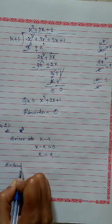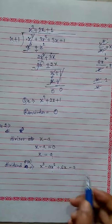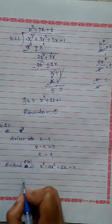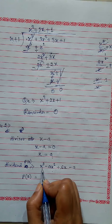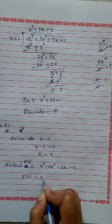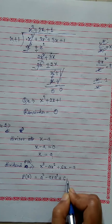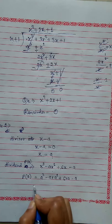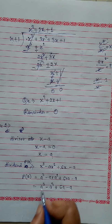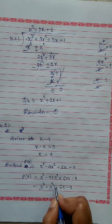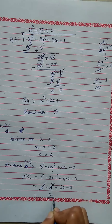Here the dividend P(x) equals x cubed minus ax squared plus 6x minus a. Since x equals a, in place of x we put a: a cubed minus a times a squared plus 6 times a minus a. Here you see: a cubed minus a cubed — these cancel. Then 6a minus a gives 5a. So our answer is 5a.